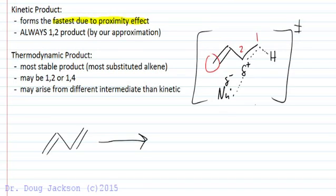So we're going to always call the kinetic effect the 1,2-product. We're approximating this because there's always an example that violates the rule due to sterics or some other factor, but with all other things aside, we're going to call the kinetic product the 1,2-product due to this proximity effect of the delta plus buildup as the nucleophile adds.